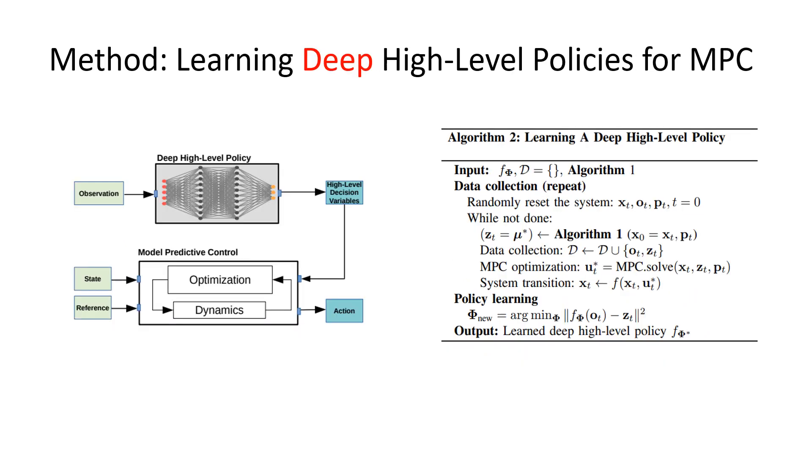Second, we propose a self-supervised learning algorithm for learning a neural network high-level policy by combining policy search with supervised learning. Conditioned on a robot's observation in a changing environment, the trained policy is capable of adaptively selecting decision variables for MPC.